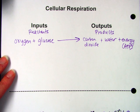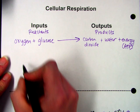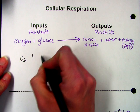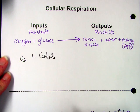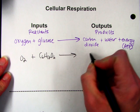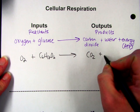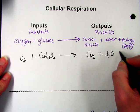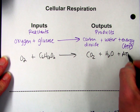So if you want to, you can write this in terms of symbols. Again, oxygen is O2, glucose is C6H12O6, carbon dioxide is CO2, water is H2O, and we'll just leave ATP for energy.